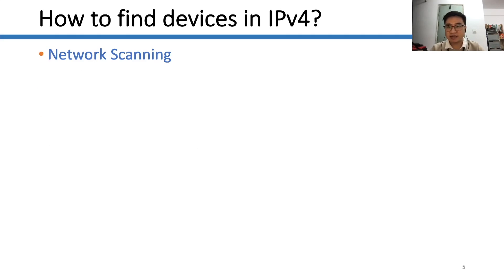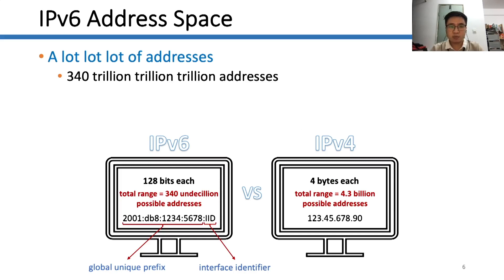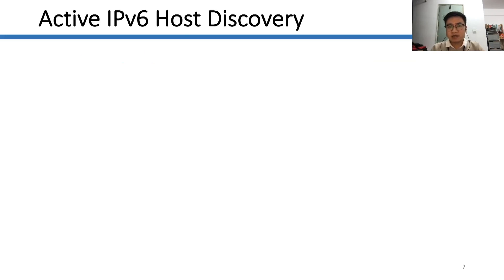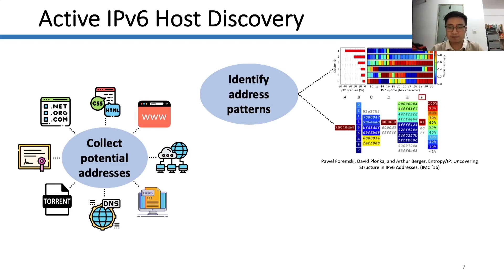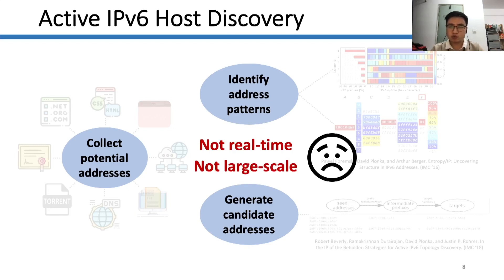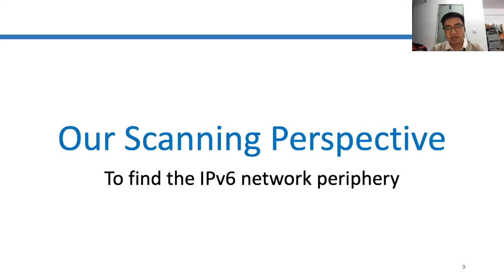In the IPv4 internet, researchers often use the network scanning approach to find devices, uncover vulnerabilities, track botnets' behaviors, and so on. However, IPv6 brings in 128-bit addresses and makes IPv4-style brute force scanning not workable. Researchers introduced various techniques to discover active IPv6 hosts, however these methods are not real-time and not large-scale. So we aim to discover the IPv6 network periphery from a new scanning perspective, using the IPv6 address allocation principle.